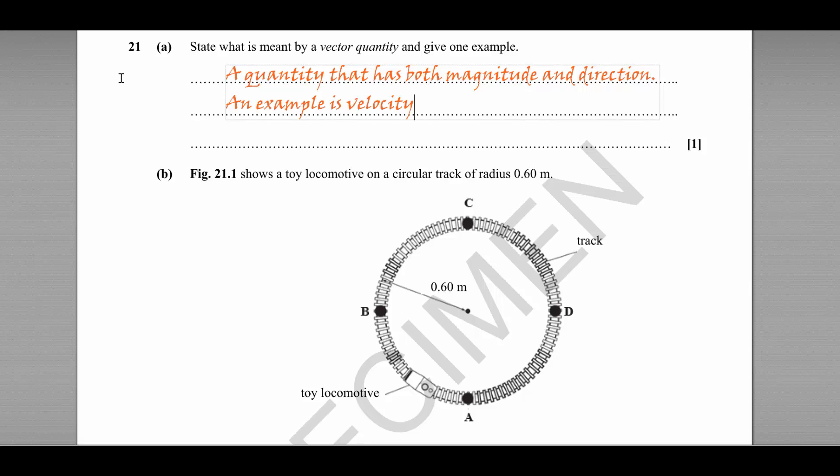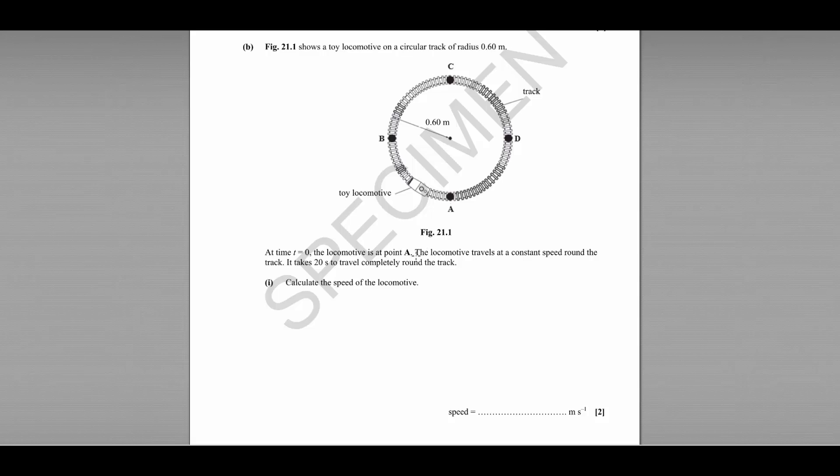Part B shows a toy locomotive on a circular track. The track has a radius of 0.6 meters. The locomotive begins at point A and travels at a constant speed around the track, taking 20 seconds to complete it.